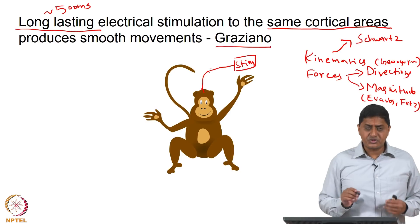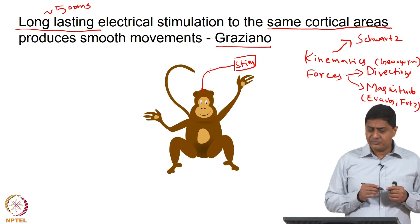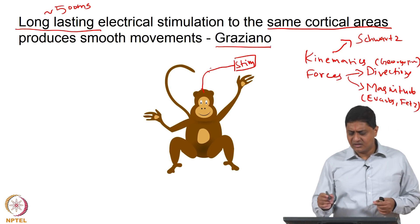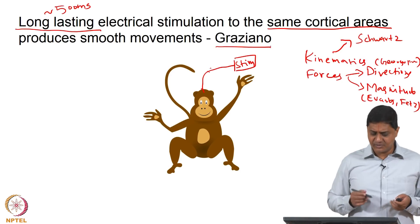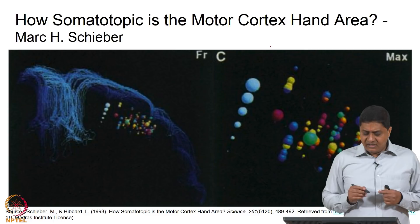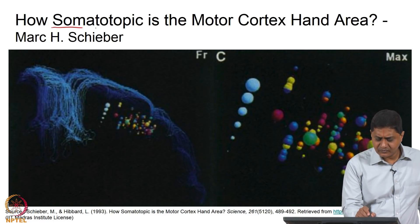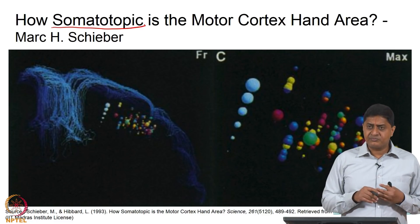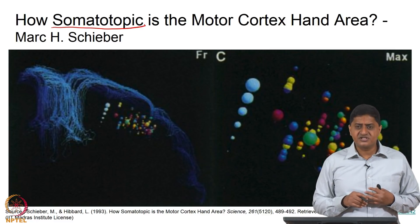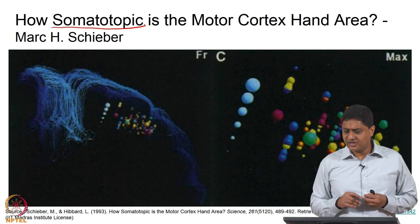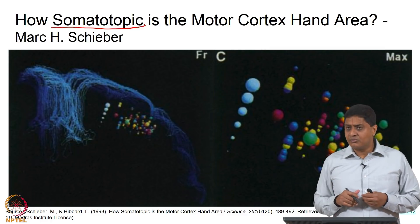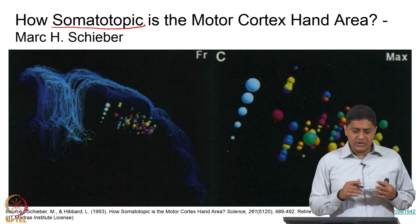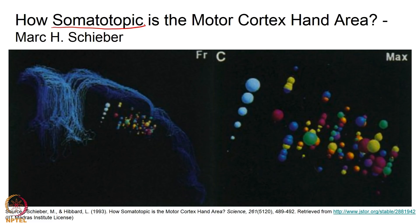For now, this is the work of Graziano, showing that long-lasting electrical stimulation produces relatively smooth, well-coordinated movements in monkeys. There are some nice papers from this group — those who are interested can read about this. Moving on, we come back to the topic of somatotopy. Wilder Penfield in the 1930s performed stimulations on neurosurgical patients and found movements elicited depending on the site of stimulation, coming up with a motor map — also called Penfield's map.